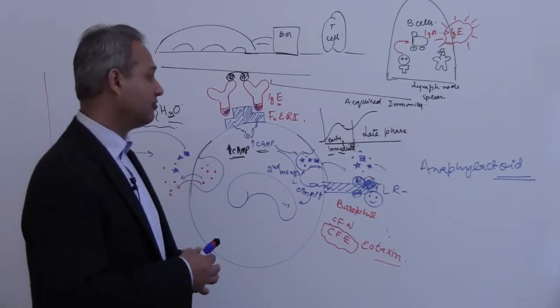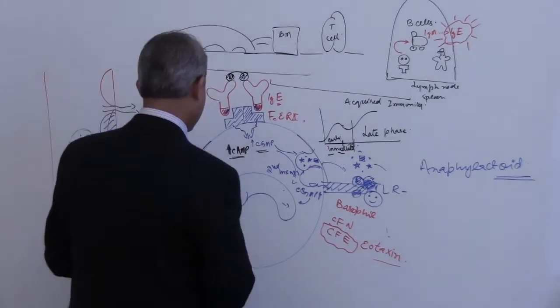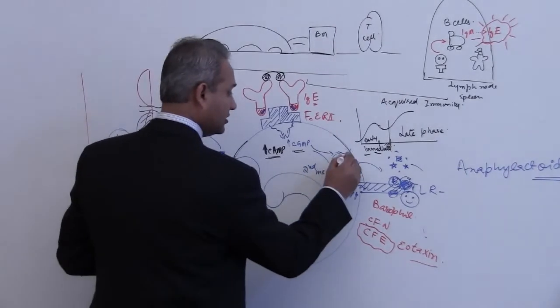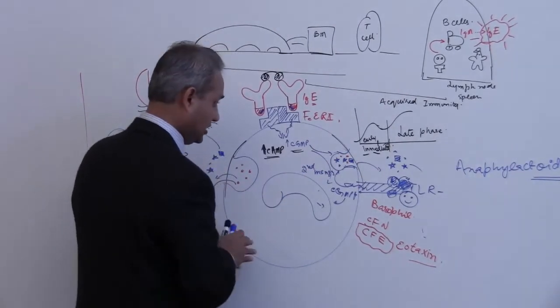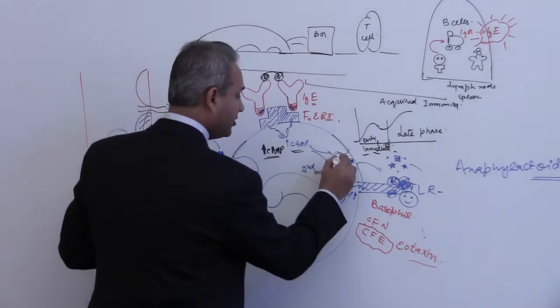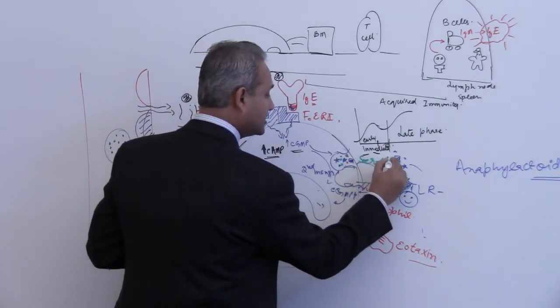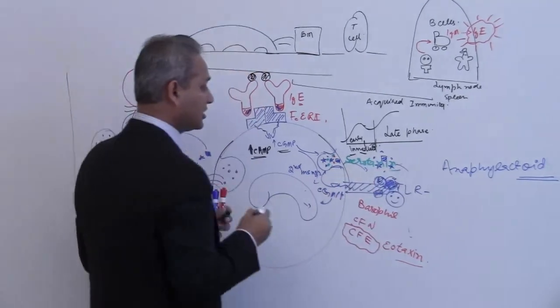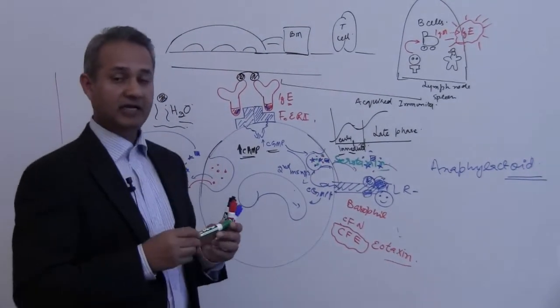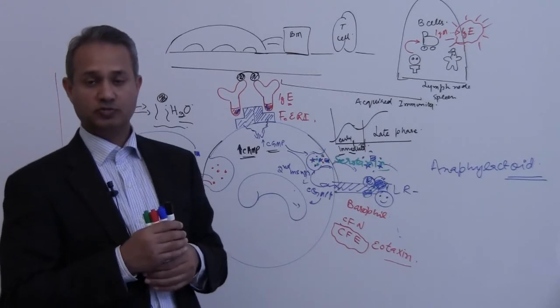One more thing which I forgot to mention: one of the preformed substances is also serotonin. Serotonin again has the same action: increase vascular permeability and smooth muscle contraction.